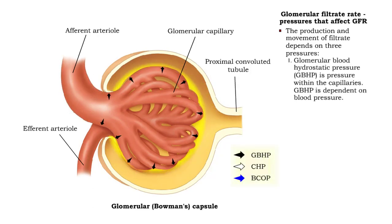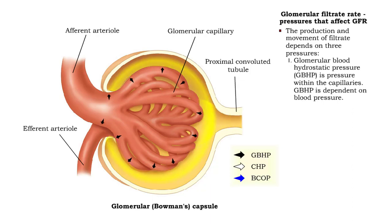The pressure driving filtrate production and movement is called glomerular blood hydrostatic pressure. Glomerular blood hydrostatic pressure is pressure within the capillaries and is dependent on blood pressure.